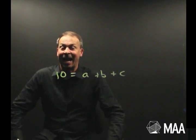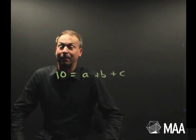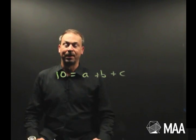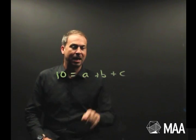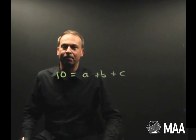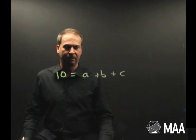In fact, mathematicians love this approach, it's actually extraordinarily powerful indeed. Let me show you how. Here's a question, how many solutions are there to 10 equals a plus b plus c, where a, b, and c are each whole numbers bigger than or equal to zero. So they're counting numbers and I'll also include zero.